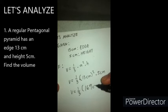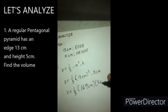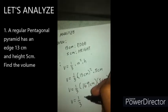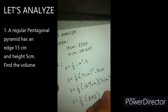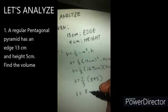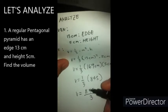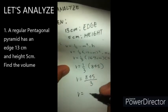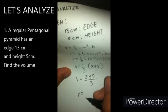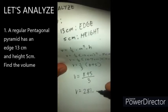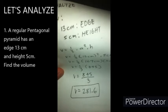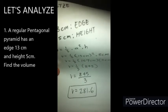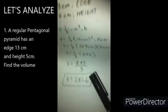So 13 squared is 169 cm, times the height which is 5 cm. So V equals one third times 845 cm. That gives us 845 divided by 3, which equals 281.6. This would be our volume for the regular pentagonal pyramid which has an edge of 13 centimeters and a height of 5 centimeters.